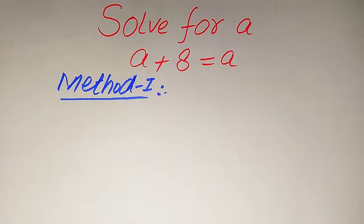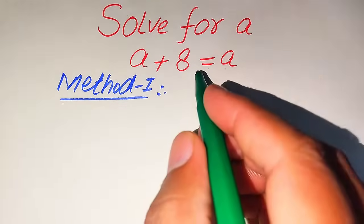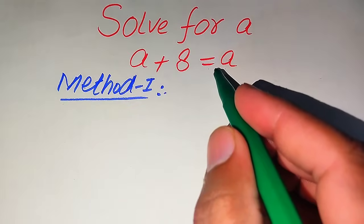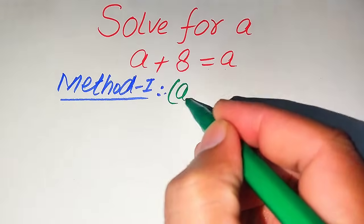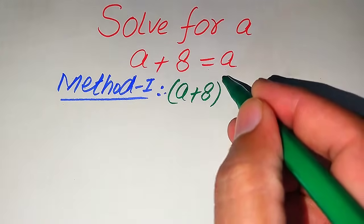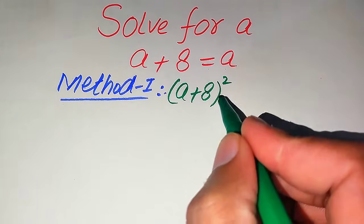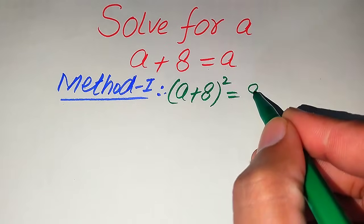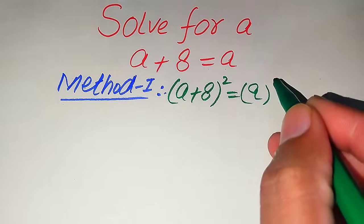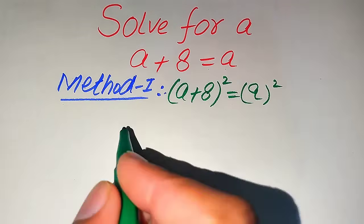Now we move towards the solution of Method 1. In Method 1, we need to take squaring on both sides. When we square both sides, it will be written as (a + 8)² equals a².